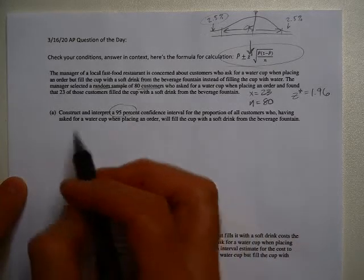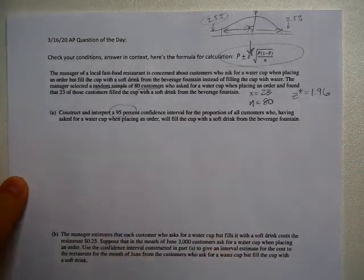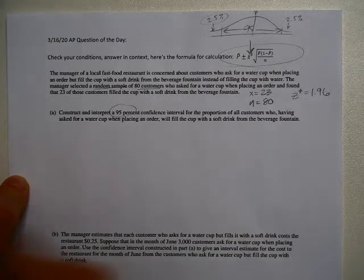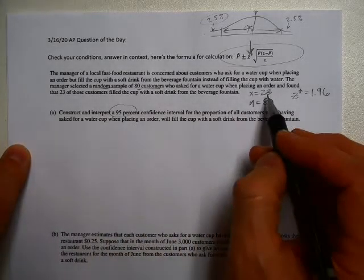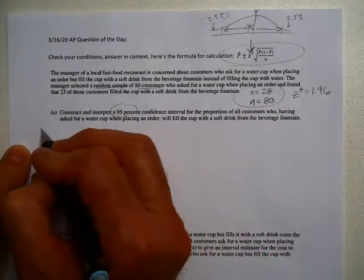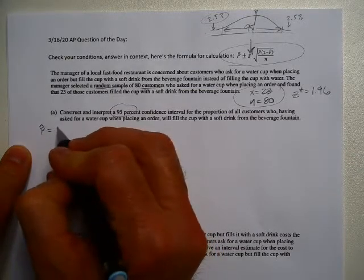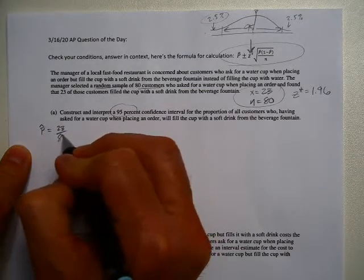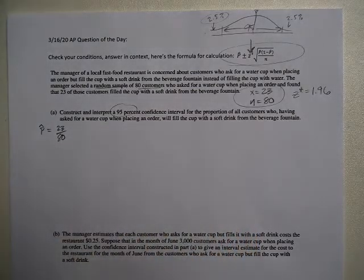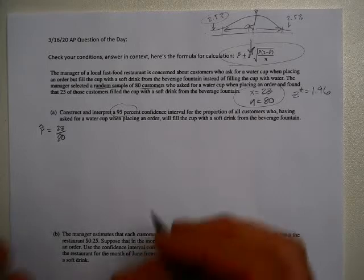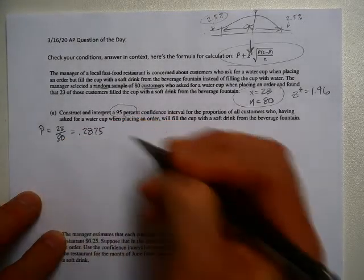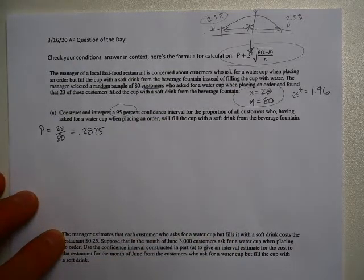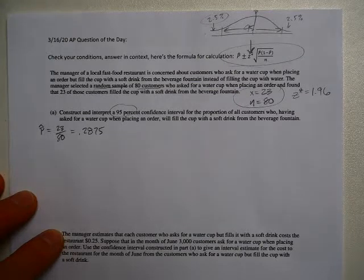Moving on. Construct and interpret a 95% confidence interval for a proportion of all customers who, having asked for a cup of water when placing an order, filled a cup with soft drink. So I'm going to use these guys to get my p-hat value. That's 23 divided by 80, and it gives me a p-hat value of 0.2875. I've got my n. I've got my z star now. I've got everything I need, except I have to do conditions.